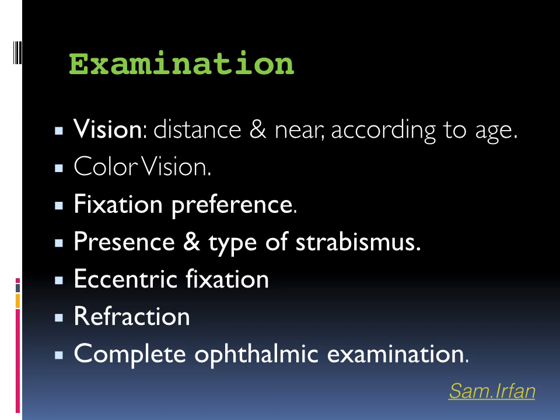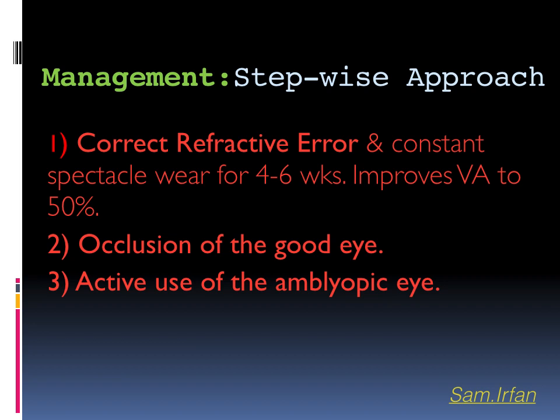Then look for eccentric fixation, which is assessed with a visuoscope. Regarding refraction: if the child has an esotropia or esophoria, it is important to dilate fully with atropine for three days before refraction. If the child is orthophoric or has an exophoria or exotropia, cyclopentolate is sufficient. Following refraction, a complete ophthalmic examination of the anterior segment and detailed examination of the fundus is done, documenting whether the fovea is normal, because any visual improvement will depend on the status of the fovea.